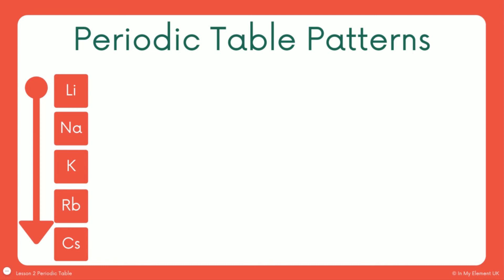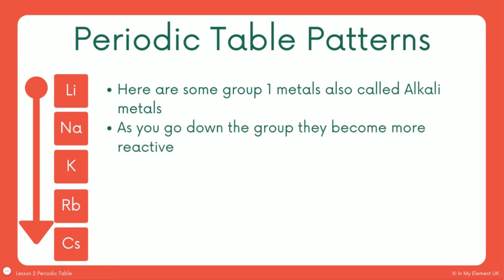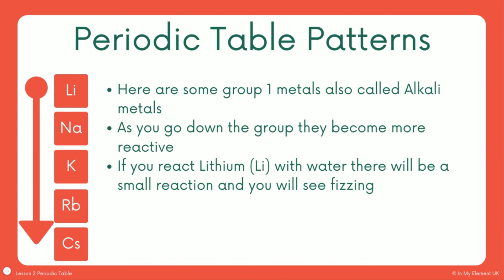We mentioned the patterns and reactivity. So I've taken some elements there. You've got Li, Na, K, Rb and Cs. They are all taken from group one. They are your group one metals, also known as the alkali metals. As you go down the group, so as you follow that arrow from lithium through down to cesium, they become more reactive. So if you react lithium with water, there'll be a small reaction and you will see some fizzing and some gas given off.